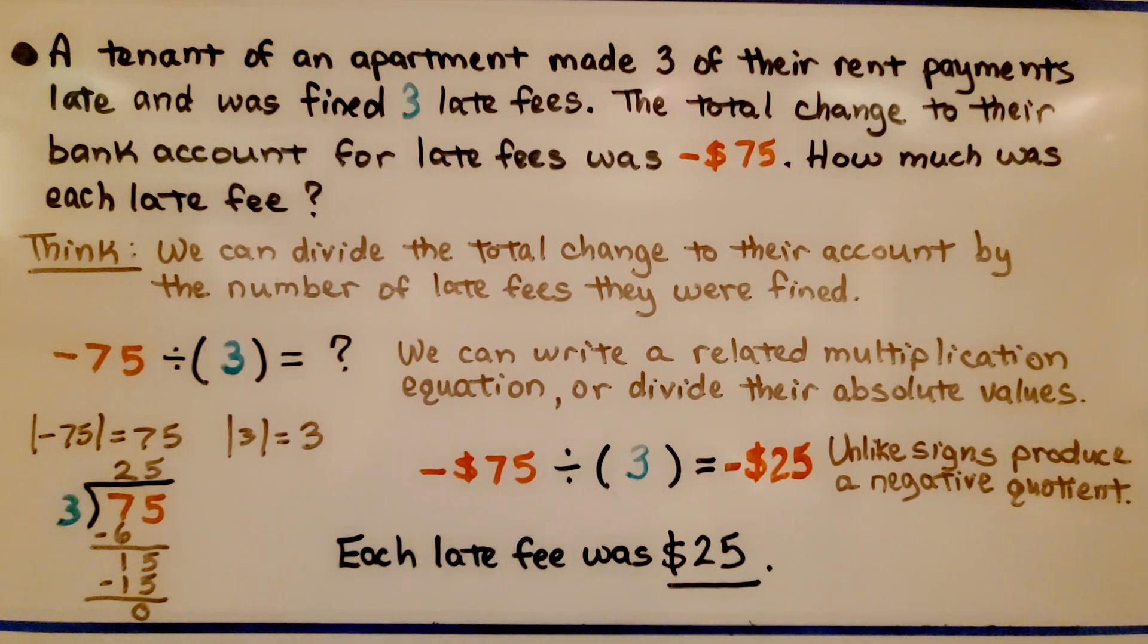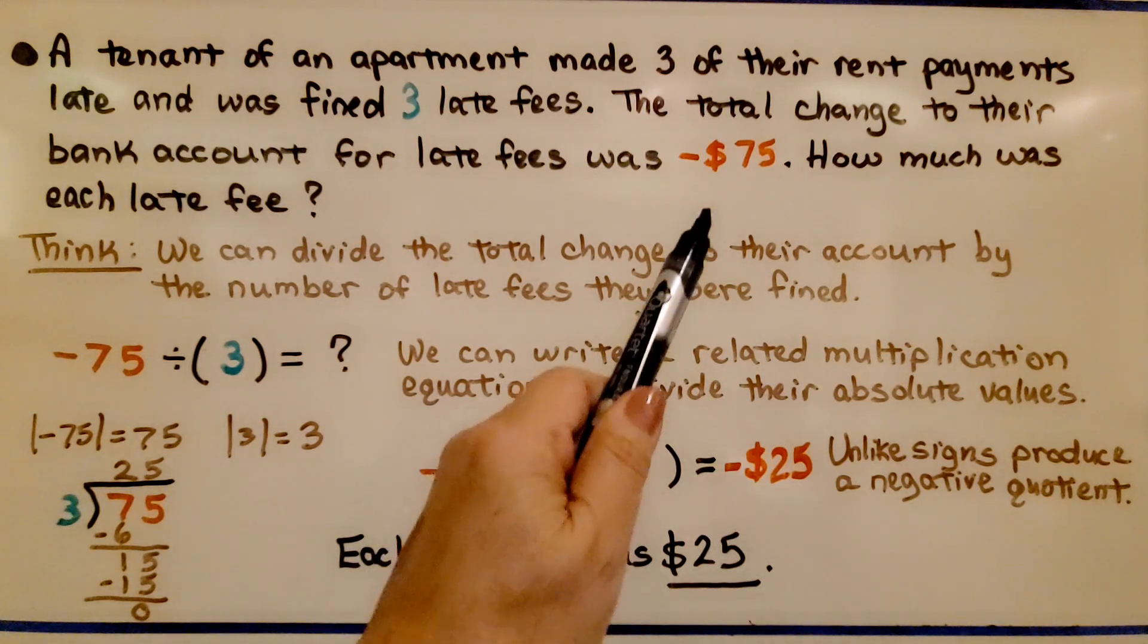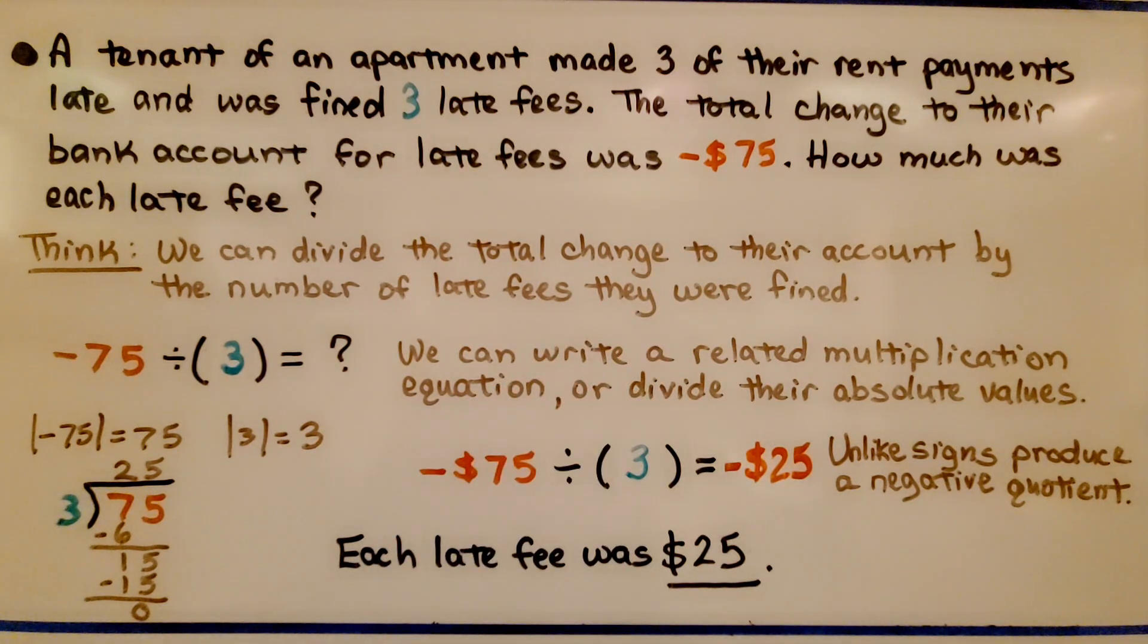A tenant, that's a renter, of an apartment made 3 of their rent payments late and was fined 3 late fees. The total change to their bank account for the late fees was negative $75. How much was each late fee?